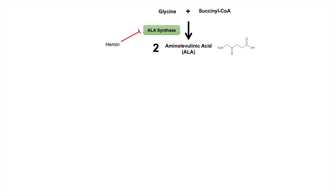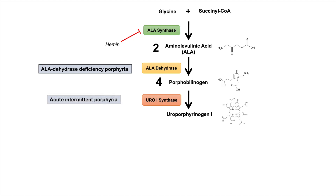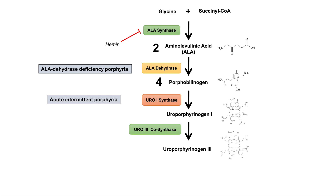The next step requires two ALA, which are used by the enzyme ALA dehydratase to produce porphobilinogen. The next step requires four porphobilinogens, which are used by the enzyme uroporphyrinogen 1 synthase to produce uroporphyrinogen 1. Deficiencies in uro1 synthase lead to acute intermittent porphyria. Then uroporphyrinogen 3 cosynthase produces uroporphyrinogen 3 from uroporphyrinogen 1, and issues with this enzyme lead to congenital erythropoietic porphyria.